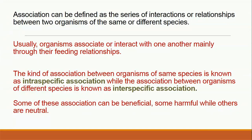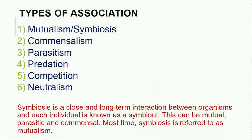'Inter' means different. Some of these associations can be beneficial — they are good relationships; some can be harmful — they are bad relationships; while others are neutral — neither good nor bad. Types of association include: one, mutualism, also known as symbiosis; two, commensalism; three, parasitism; four, predation; five, competition; and six, neutralism. Symbiosis is a close and long-term interaction between organisms, and each individual is known as a symbiont. This can be mutual, parasitic, and even commensal.